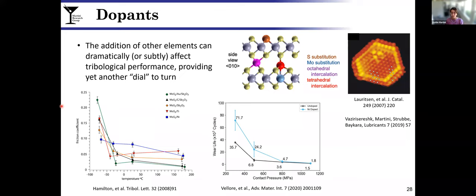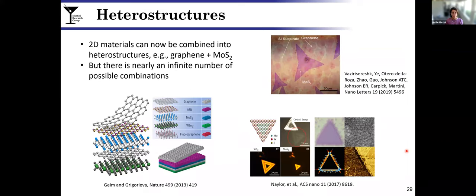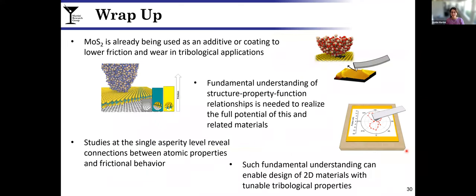We performed another study on nickel dopant and found that particularly at low contact pressures it can dramatically increase the wear life of MoS2 coatings. Lastly, I introduced the idea of a heterostructure when I showed you the graphene-MoS2 work, but this is kind of just the tip of the iceberg. There's so many different possible 2D materials. Conceptually, we may be able to combine them, layer them, group them to customize or tune the properties of two-dimensional low friction materials.